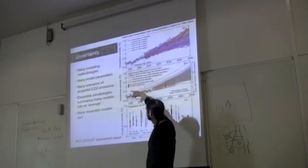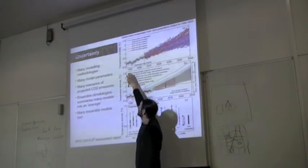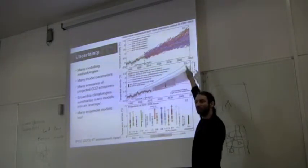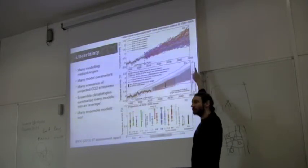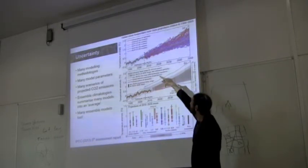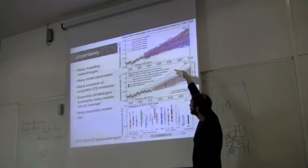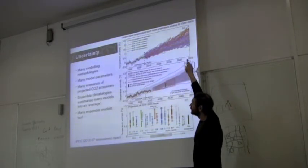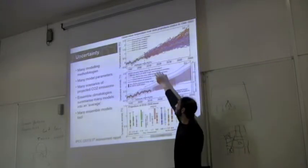And you've probably all seen this before, but they show that each line represents one model that's been run to look at future temperature. And this is like, the lines show global temperature change over time.